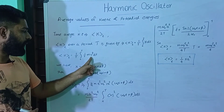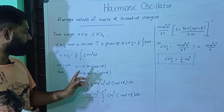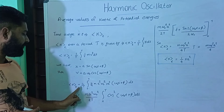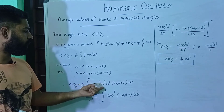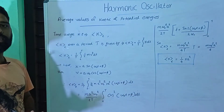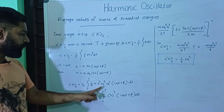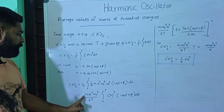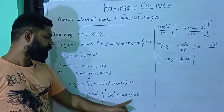Here we consider v². So v² = a²ω² cos²(ωt + φ). We substitute v² into the equation. Then average kinetic energy K̄ = (1/T) ∫₀ᵀ ½m · a²ω² cos²(ωt + φ) dt. The constant term is ½ma²ω², giving: K̄ = (ma²ω²)/(2T) ∫₀ᵀ cos²(ωt + φ) dt.